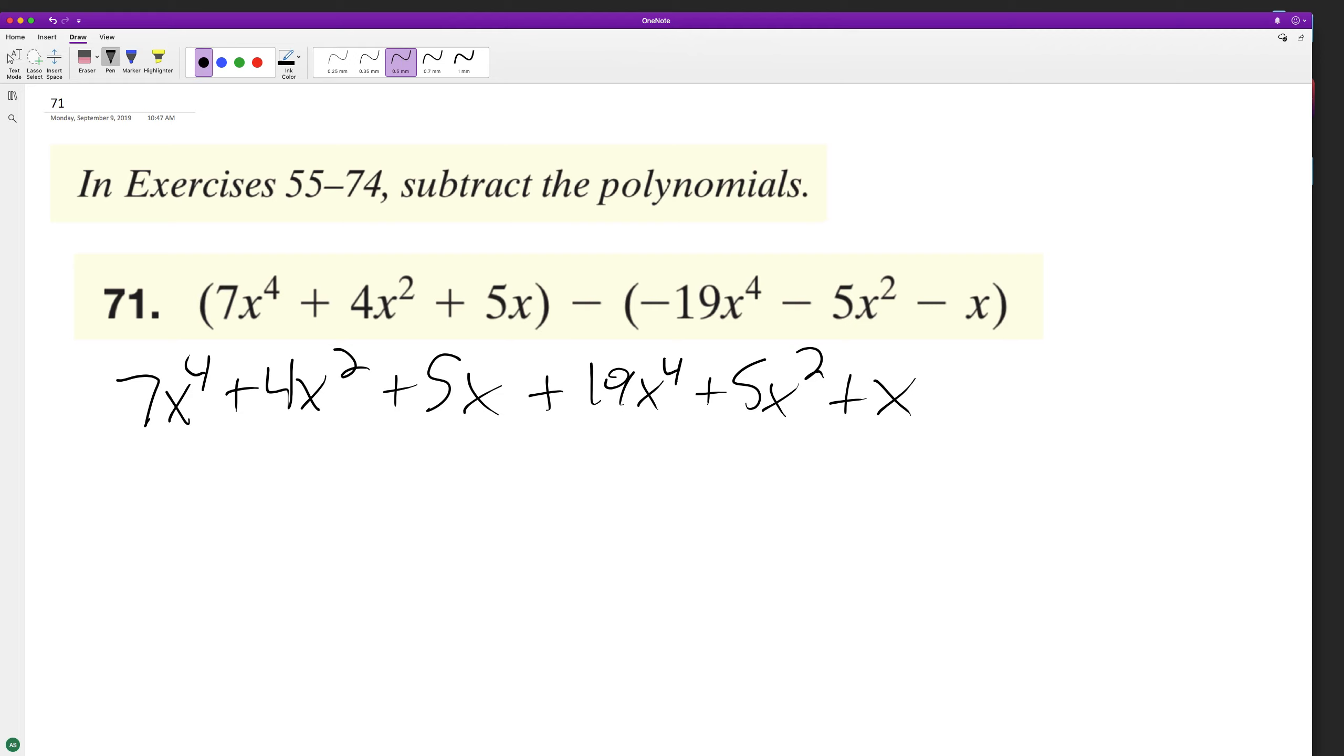7x to the fourth plus 19x to the fourth is gonna be 26x to the fourth.